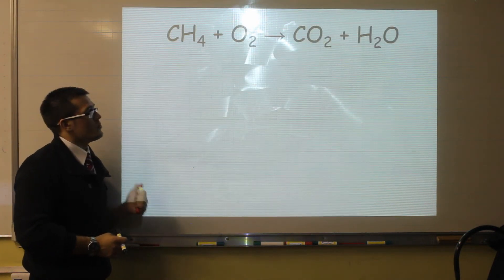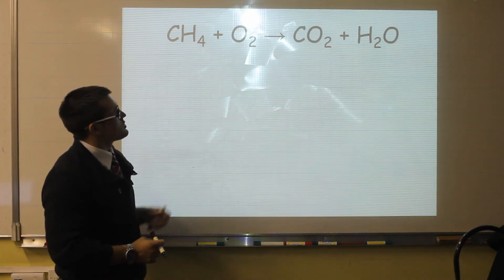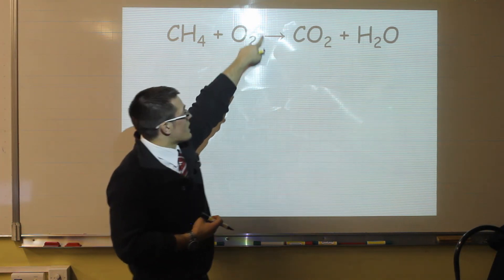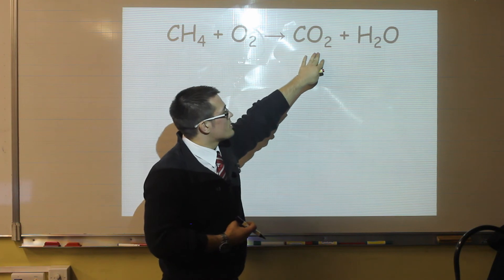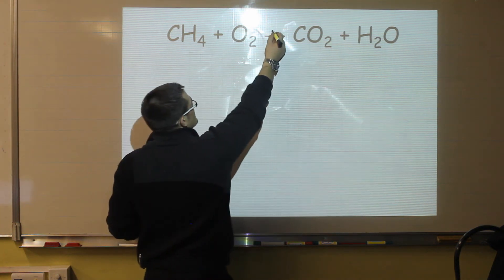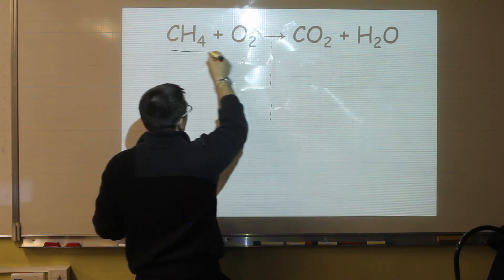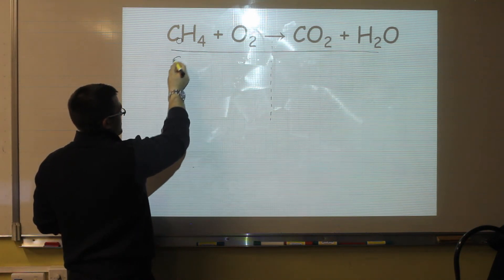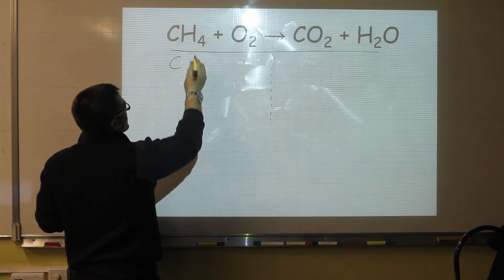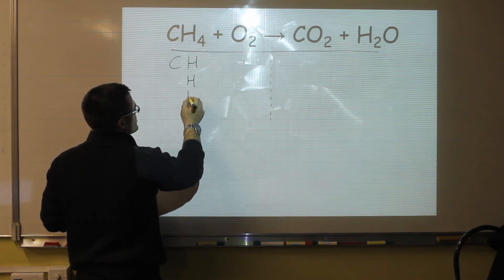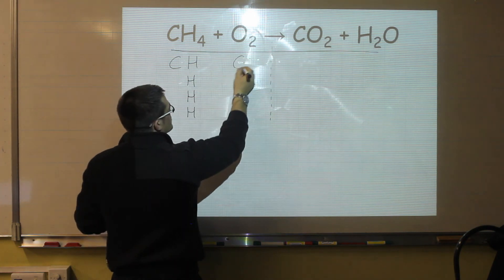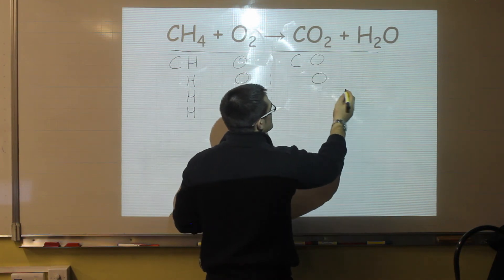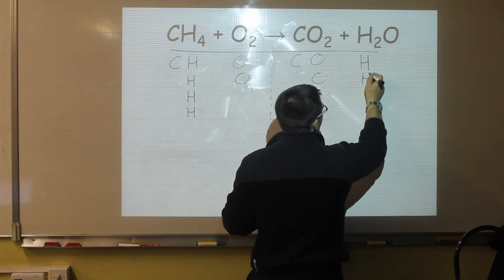Now let's look at one specific example from C1, which is combustion reactions. In this reaction, we have methane reacting with oxygen — that's combustion, it's burning — and we get two products: carbon dioxide and water. We split the equation in half, just as before, and work out what atoms we have. There's no number next to the carbon, so we have one carbon atom. We have a four next to the hydrogen, so we have four hydrogen atoms. We have a two next to the oxygen, so we have two of those. On the right side: one carbon, two oxygens from CO2, two hydrogens, and one more oxygen from water.